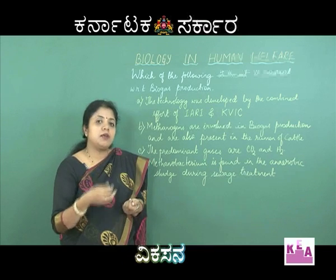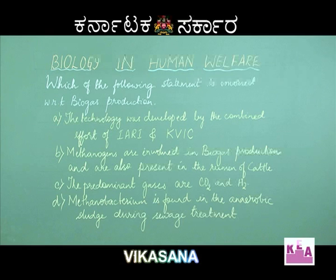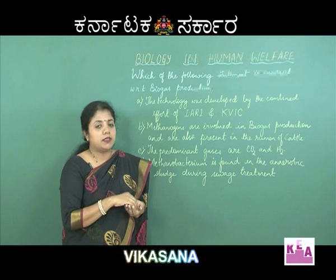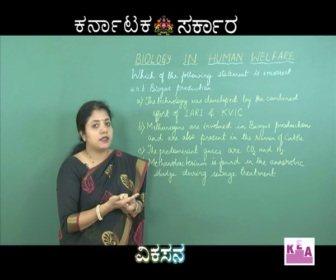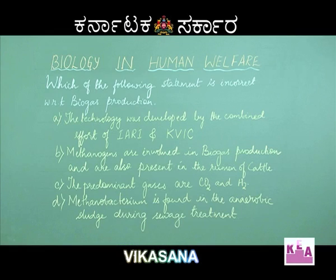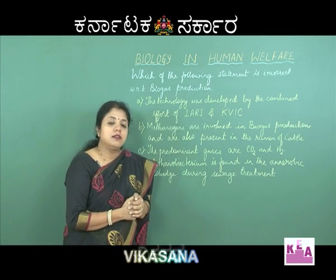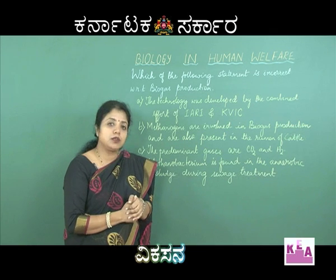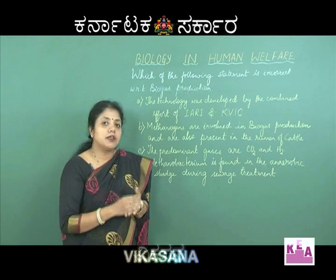Regarding statement C, when methanogens act on organic material, they break it down and three gases evolve: methane, carbon dioxide, and hydrogen — of which methane is the most predominant gas. Statement C only mentions carbon dioxide and hydrogen, omitting methane. Statement D is correct — during sewage treatment, Methanobacterium breaks down organic substances in sewage evolving biogas.